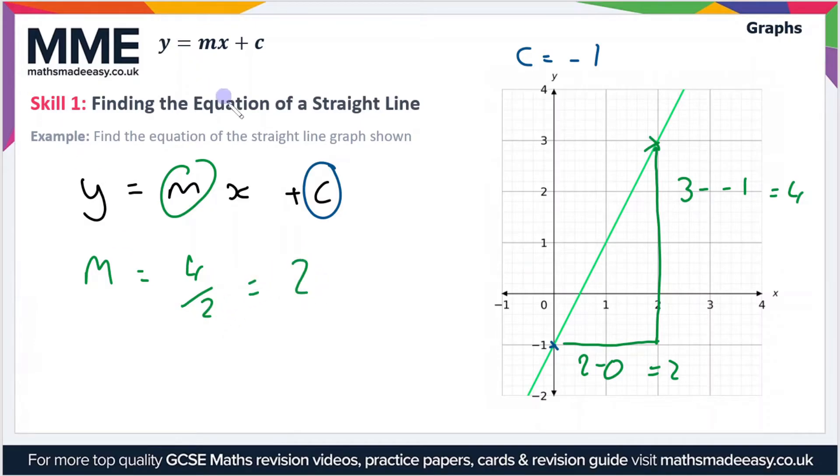So we can now rewrite our equation of the straight line which is y equals m which is two, so two x plus c. Now c is minus one so our equation becomes y equals two x minus one.